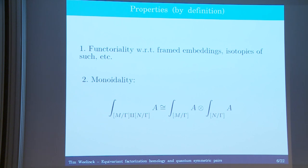It's monoidal, so taking the disjoint union of two orbifolds, the invariant assigned is naturally the tensor product of the separate invariants.